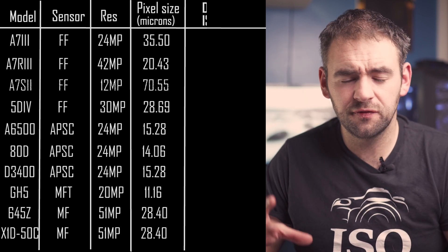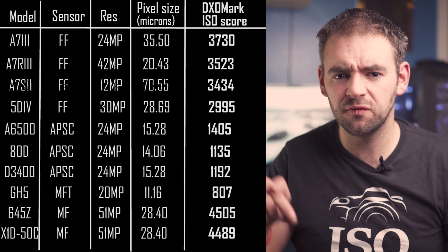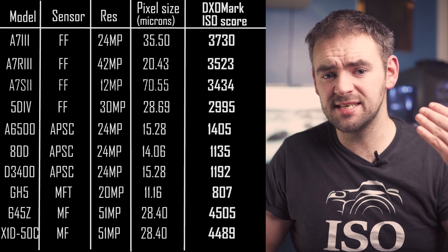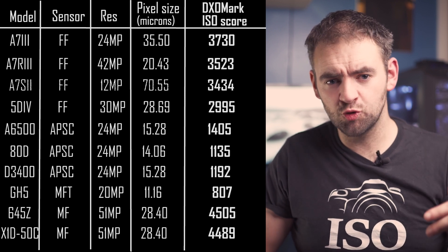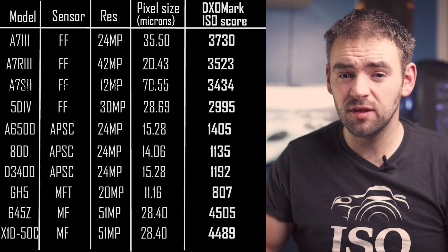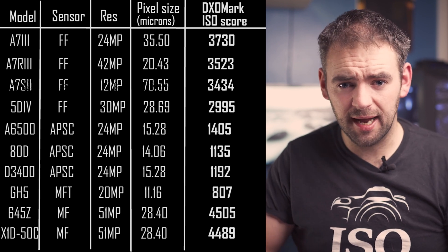However, if we look at the DXOMark scores for ISO performance, what you actually see is a very different story. These figures refer to the ISO figure the camera can reach before it hits a certain noise decibel level — so the higher the ISO a camera can reach before hitting that noise level, the better it controls noise. In terms of pixel size to noise performance, there is no correlation whatsoever. The A7S II should have walked away with it, but it hasn't. The 5D Mark IV should be on par with medium format cameras, but it's not. What there IS a clear correlation with is sensor size and noise performance: medium format cameras are by far the best, followed by all four full-frame cameras, followed by APS-C, followed by Micro Four Thirds.